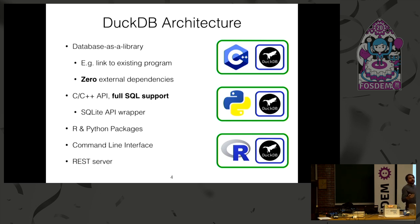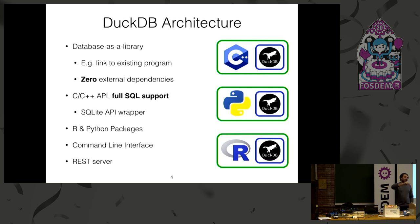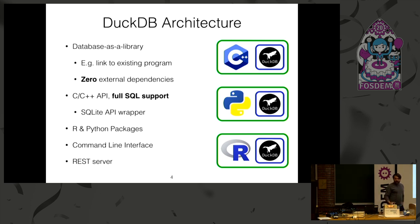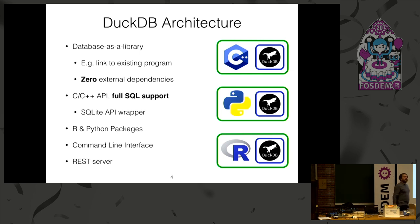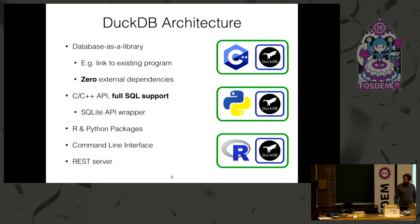We've also built a wrapper for the SQLite API, so if you have an application that talks to SQLite, you can do some library preload tricks and it will use DuckDB instead, making it easy to switch. We've also learned how important it is to integrate with the tools people use. In data analysis, people use R and Python, so there are packages for both that include everything you need to run DuckDB. There's also a command-line interface, and for web use cases, we have a REST server as well.